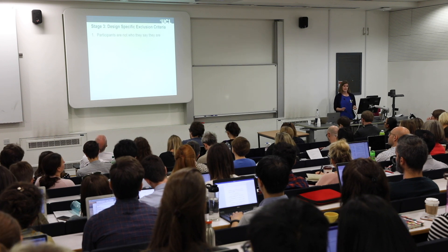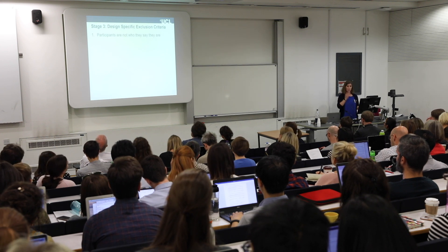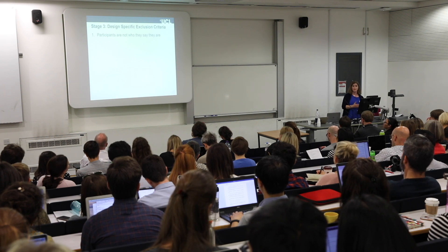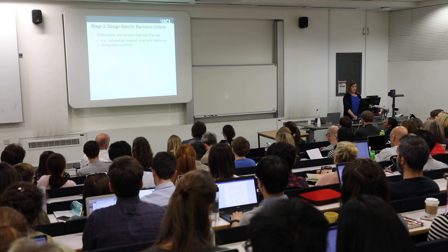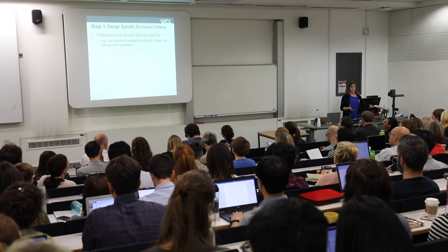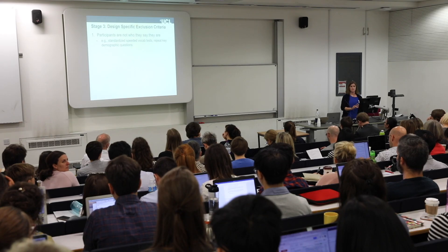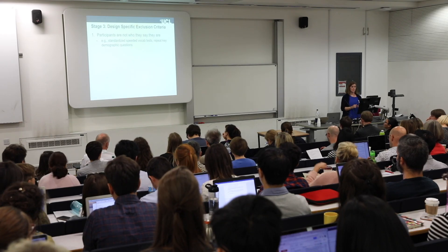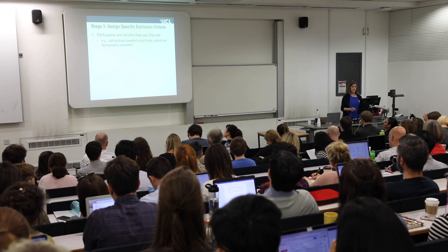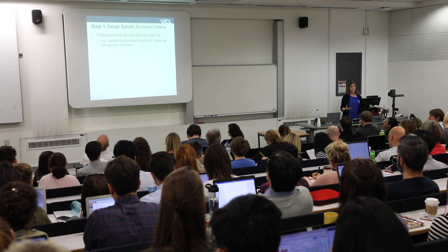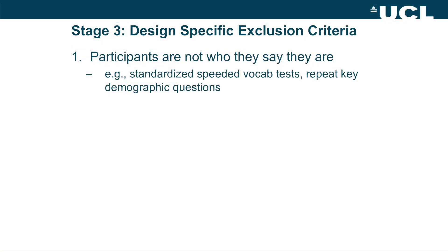Then you design your exclusion criteria — deciding in advance what reasons you'll use for excluding someone from your analysis. If you're worried about language skills, do a speeded vocabulary test. I would time everything in an online experiment; timing information is the most helpful tool for excluding rogue subjects. For important demographic questions, ask them at the beginning and the end in different ways. Build in those safeguards.